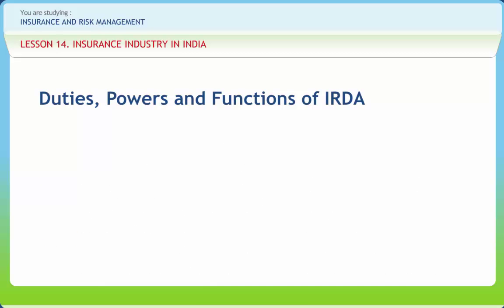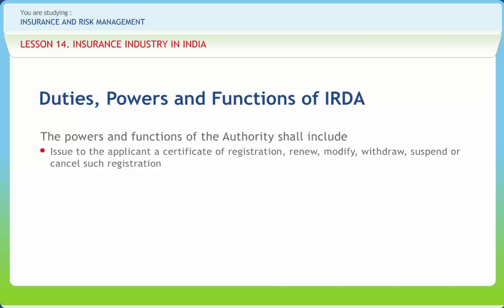Section 14 of the IRDA Act 1999 lays down the duties, powers and functions of IRDA. Subject to the provisions of this Act and any other law for the time being in force, the authority shall have the duty to regulate, promote and ensure orderly growth of the insurance business and reinsurance business. The powers and functions of the authority shall include issuing to the applicant a certificate of registration, and the ability to renew, modify, withdraw, suspend or cancel such registration.